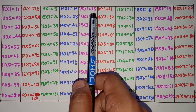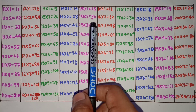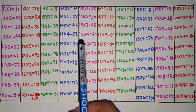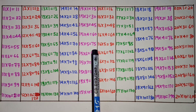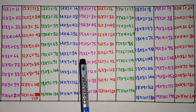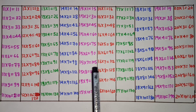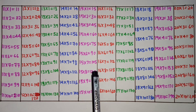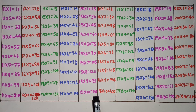15×1 is 15, 15×2 is 30, 15×3 is 45, 15×4 is 60, 15×5 is 75, 15×6 is 90, 15×7 is 105, 15×8 is 120, 15×9 is 135, 15×10 is 150.